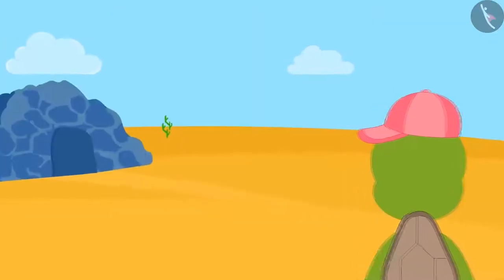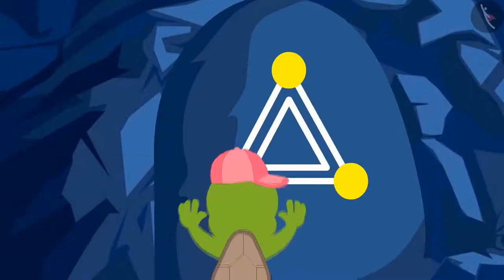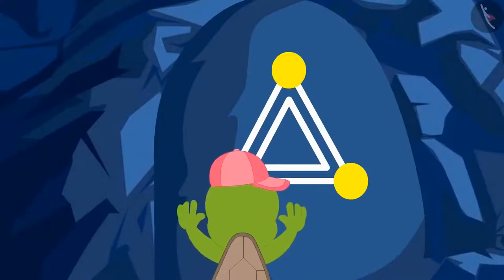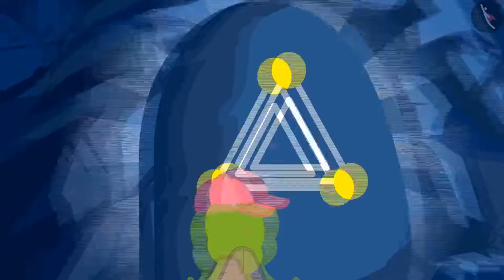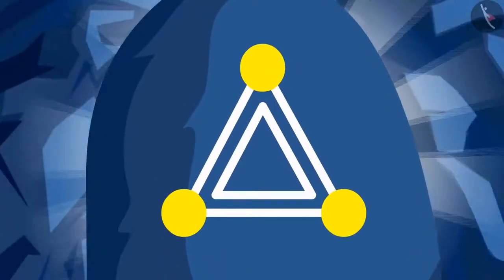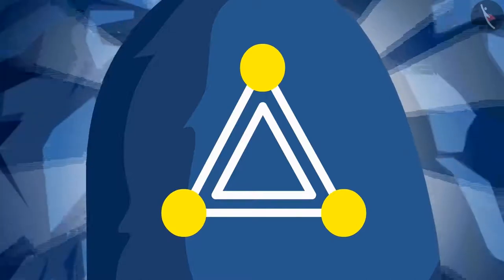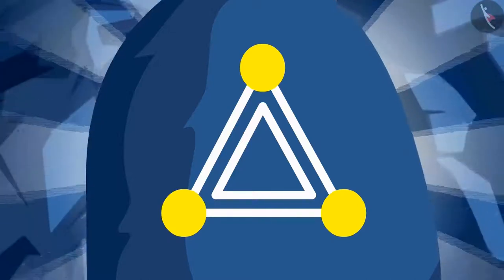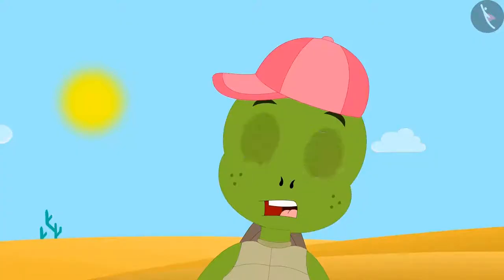One day, Tufan the turtle saw a cave. As Tufan tried to open the door, a voice came from inside. If you want to find the treasure hidden in the cave, you have to open three doors. There is a puzzle on each door. When you find the right answer to the puzzle, that door will open.